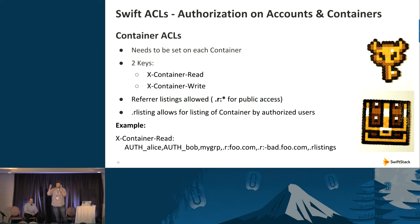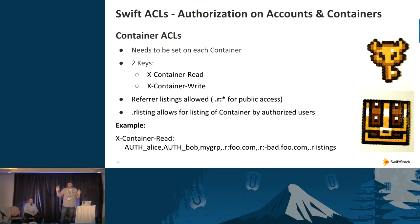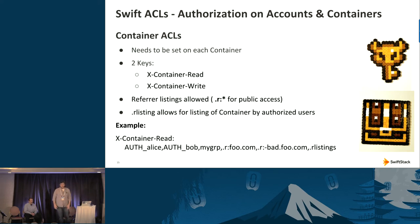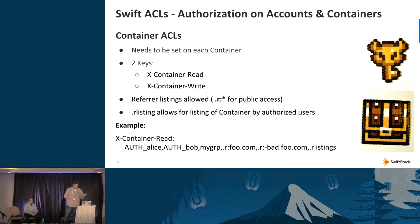If you have public content in Swift and a web application generating references to images stored there, a well-behaved client via any web browser — even back to Netscape days — will send the referrer header, and you can trust it to authorize the request. Or you can put a wildcard splat on it, which is what most people do — it makes content totally accessible to anyone. Point your browser at the Swift cluster URL and you can look at those objects.